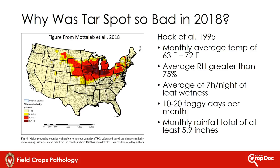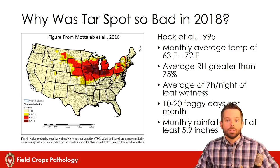Why was tar spot so bad in 2018? A lot of it had to do with the weather. We actually had very conducive conditions early on in the season when the corn crop was at a very susceptible growth stage. Back in the mid-nineties, Hawk and others actually looked at weather parameters responsible for tar spot epidemics. What they found was that monthly average temperatures ranging between 63 and 72 degrees Fahrenheit were conducive, along with average relative humidity of 75% or greater, substantial leaf wetness in the evening hours, 10 to 20 foggy days, and rainfall of six inches or more — all conducive for tar spot epidemics in Latin America.